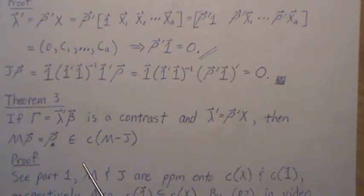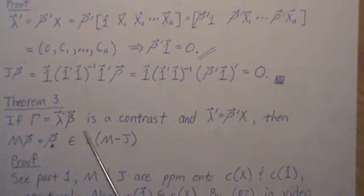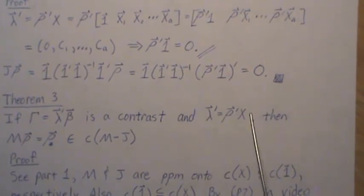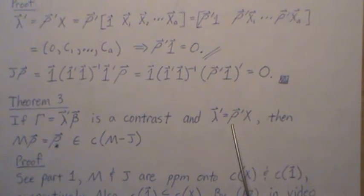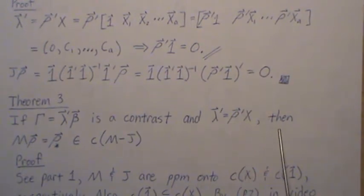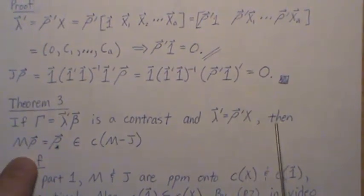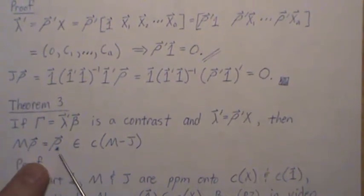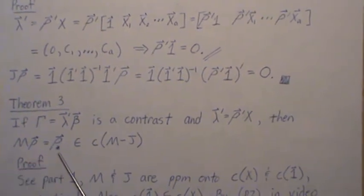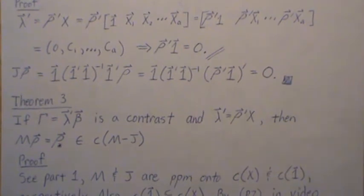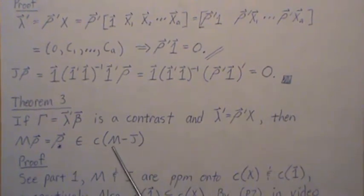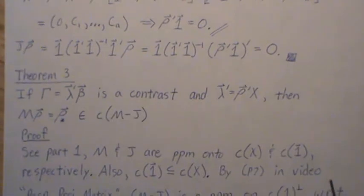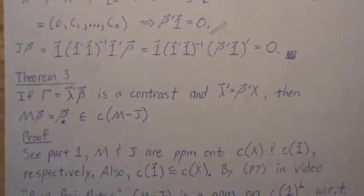Theorem three: if gamma is a contrast that is uniquely estimable, then M rho equals rho star, which lives in the column space of M minus J. This result will be important for theorem four.